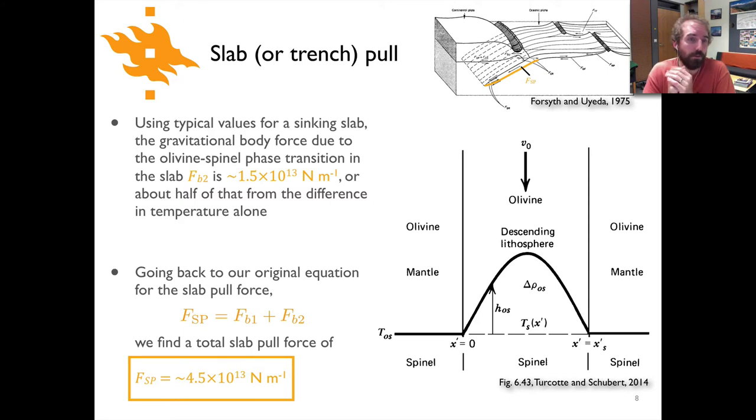So if we plug in our typical values, what we would find for this component of the slab pull force is that it's about 1.5 × 10¹³ newtons per meter. So it's about half the slab pull force from the slab being cold relative to the surrounding material.